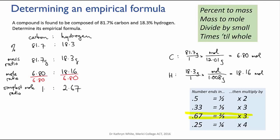In this case we need to multiply through by 3. And when you do that you find that the ratio is 3 to 8. So the empirical formula of our compound is C3H8.